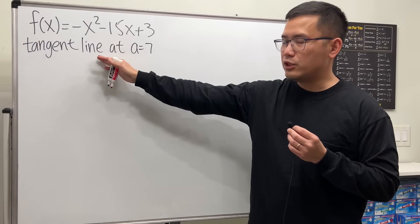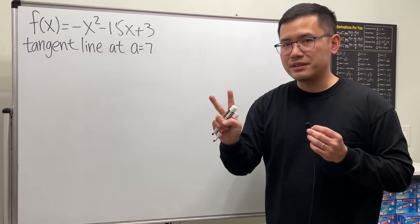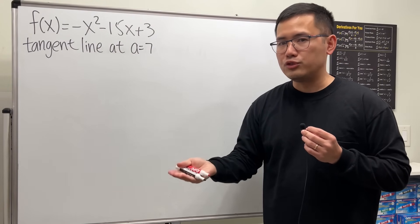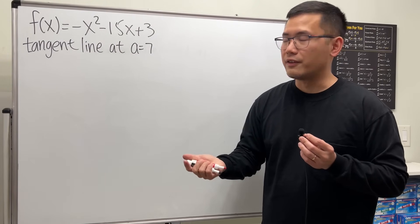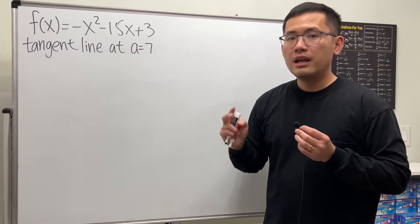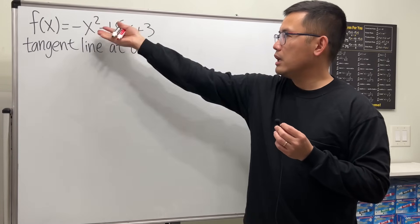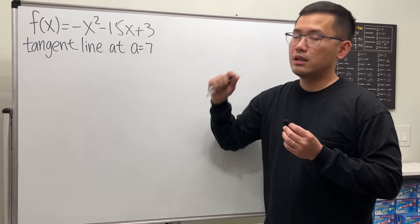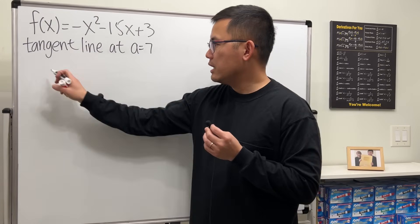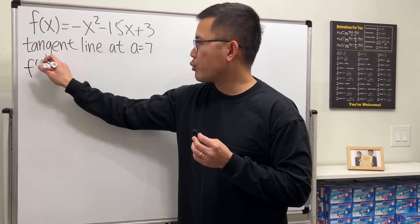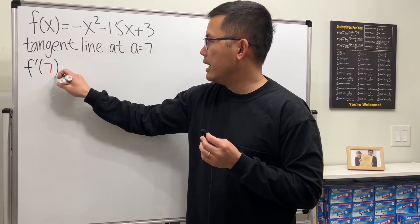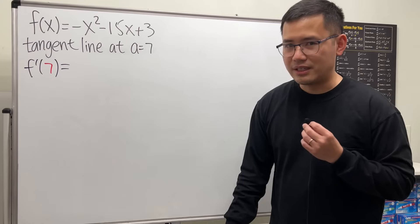To find the equation of a tangent line we need two things. First, the slope of the tangent line, which is just the derivative of the function at 7. The other thing is the point on the curve at 7. Let's get the slope first — that will be f prime of 7.